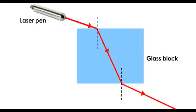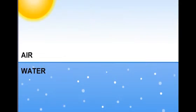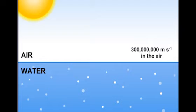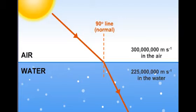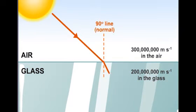The bending or change in the direction of light as it passes from one medium to another is known as refraction. Light travels at 300 million metres per second in air, 225 million metres per second in water, and 200 million metres per second in glass. Light travels at different speeds in different mediums.